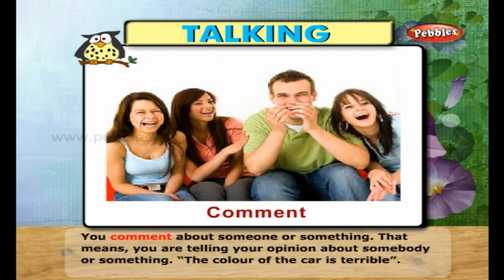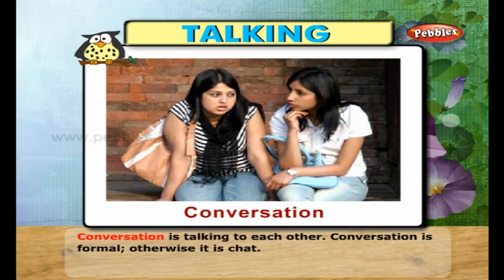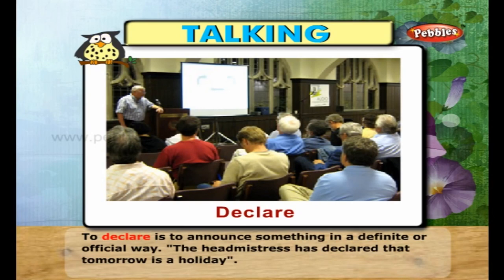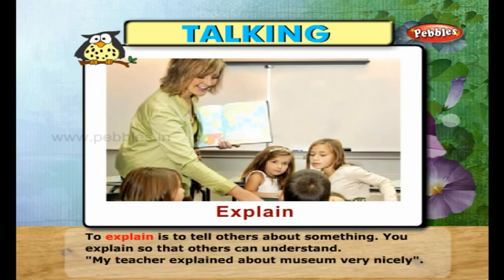When you comment about someone or something, you are telling your opinion about somebody or something. For example: the colour of the car is terrible. A conversation is talking to each other; conversation is formal, otherwise it is chat. To declare is to announce something in a definite or official way. For example: the headmistress has declared that tomorrow is a holiday. To explain is to tell others about something so that they can understand. My teacher explained about the museum very nicely.